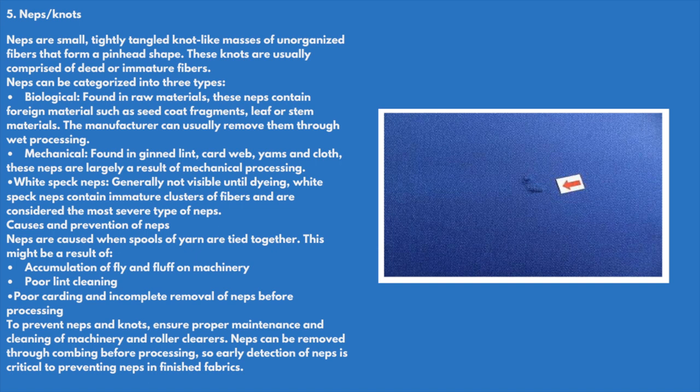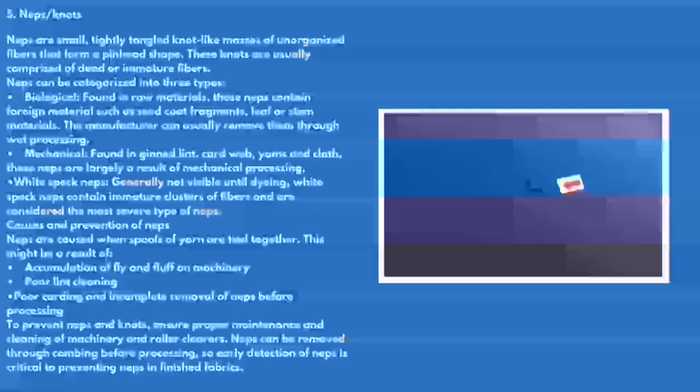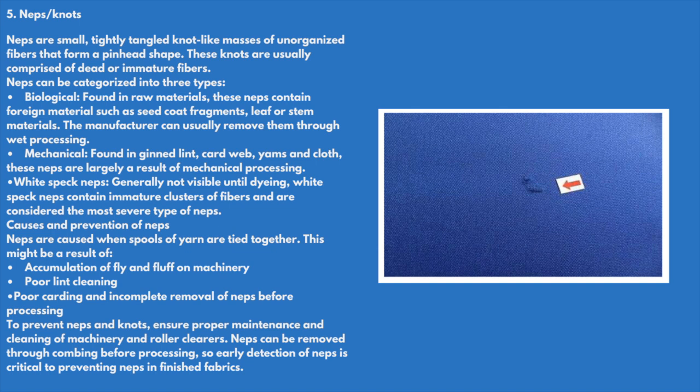Neps and knots: neps are small, tightly tangled, knot-like masses of unorganized fibers that form a pinhead shape, usually comprised of dead or immature fibers. Neps can be categorized into three types: biological — found in raw materials such as seed coat fragments, leaf, or stem material; mechanical — found in card lint, card web, yarns, and cloth as a result of mechanical processing; and white speck neps — generally not visible until dyeing, containing immature clusters of fibers and considered the most severe type.